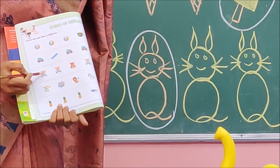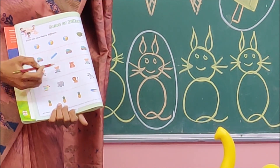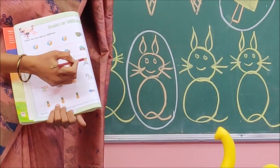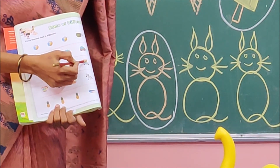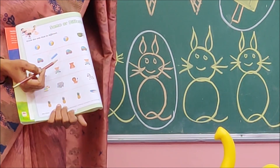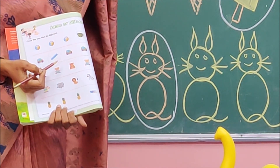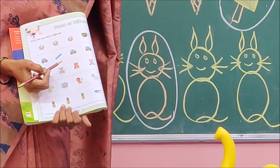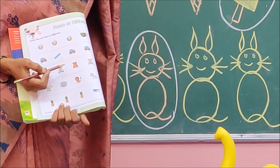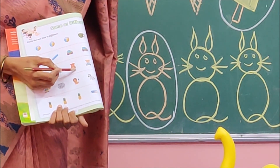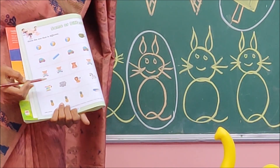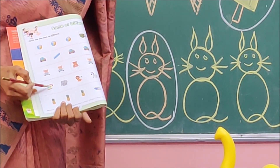This is a doll. This is a colourful doll. This is a teddy bear. This is a colourful doll. Which one is different? Teddy bear is different. So I am going to draw a circle around that teddy bear.